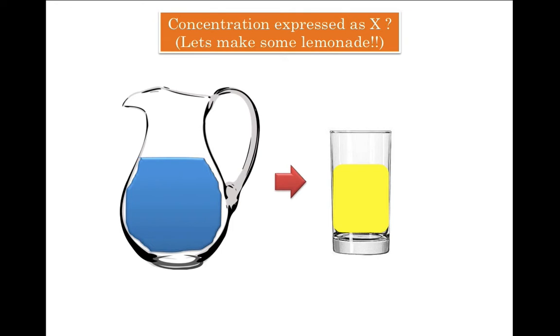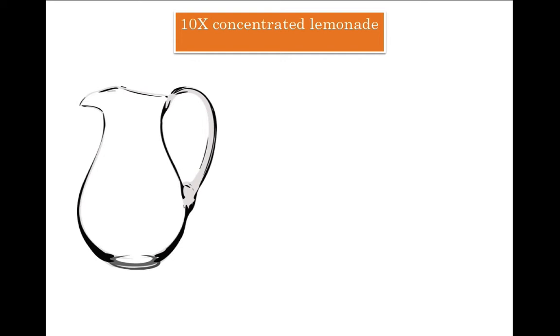Well, you will make 10X concentrated lemonade which can be diluted to 1X to drink. In order to make this 10X concentrated lemonade, all you would do is take 10 lemons, 10 sugar cubes, but you will still dissolve all these things in 1 liter of water.